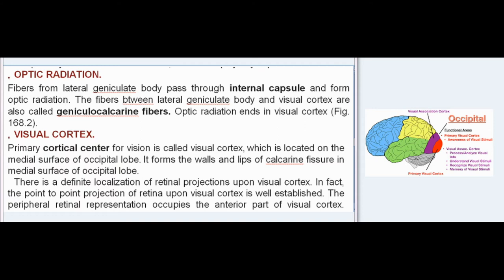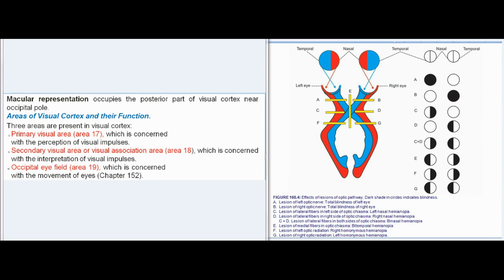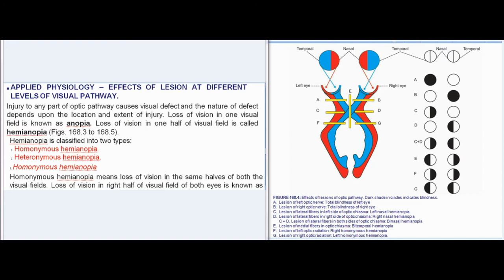Visual Cortex: The primary cortical center for vision is called the visual cortex, located on the medial surface of the occipital lobe. It forms the walls and lips of the calcarine fissure. There is definite localization of retinal projections upon the visual cortex — the peripheral retinal representation occupies the anterior part, while the macular representation occupies the posterior part near the occipital pole. Three areas are present: primary visual area (area 17), concerned with perception of visual impulses; secondary visual or visual association area (area 18), concerned with interpretation of visual impulses; and occipital eye field (area 19), concerned with movement of eyes.